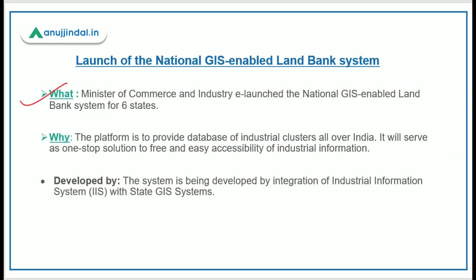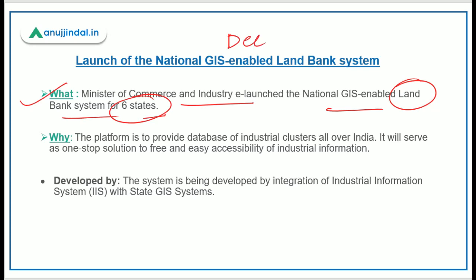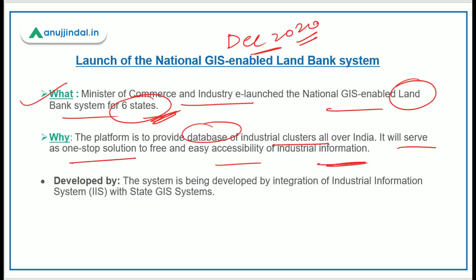Recently, Minister of Commerce and Industry launched the National GIS-Enabled Land Bank System for six states, and all other states will be launched in December 2020. This platform will provide a database of industrial clusters all over India, and it will serve as a one-stop solution for free and easy accessibility of industrial information.